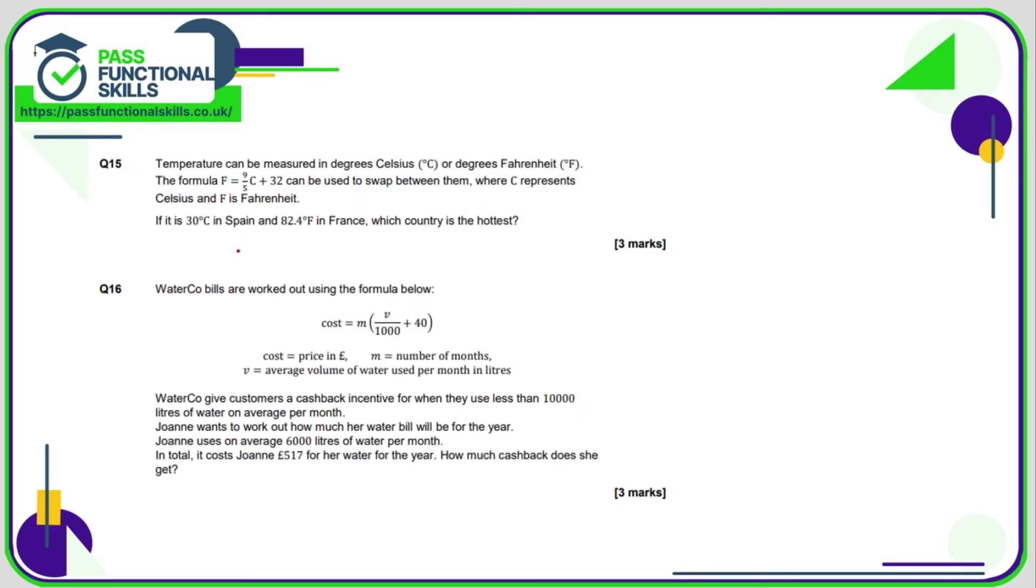Question number 15: we've got a formula for converting Celsius into Fahrenheit, so I would definitely recommend converting 30 Celsius into Fahrenheit. The formula is for Fahrenheit, so what we want is 9/5 of 30 plus 32. Nine-fifths of 30—this is a fraction of an amount, so we take our total which is 30, we divide it by 5 and then multiply it by 9. Thirty divided by 5 is 6, 6 times 9 is 54. Now we just need to add 32 to 54, and that works out as 86 degrees Fahrenheit. So we can clearly see that Spain is hotter than France.